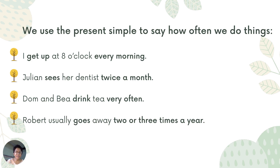We use the simple present to say how often we do things. For example: I get up at eight o'clock every morning. Julia sees her dentist twice a month. Dom and Bea drink tea very often. Robert usually goes away two or three times a year. These time expressions — every morning, twice a month, very often, two or three times a year — all call for the simple present tense.